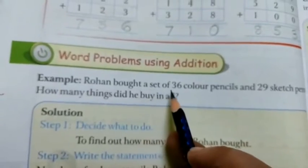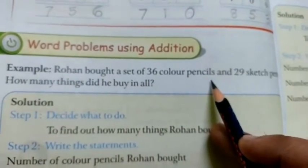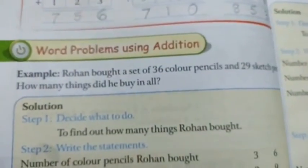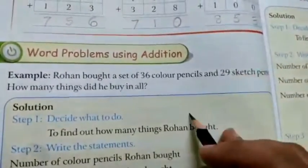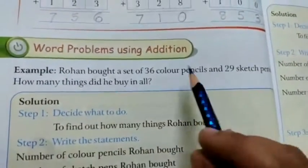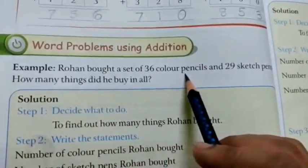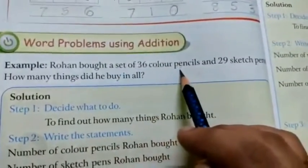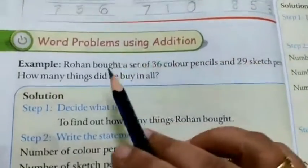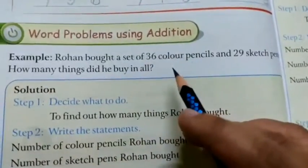For example, here Rohan bought a set of 36 color pencils and 26 sketch pens. How many things did he buy in all? So what is he asking? Rohan bought 36 color pencils, 26 sketch pens. How many things did he buy in all? In all means all together, how much total.